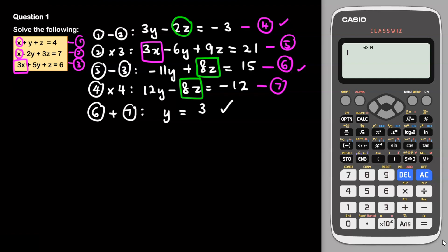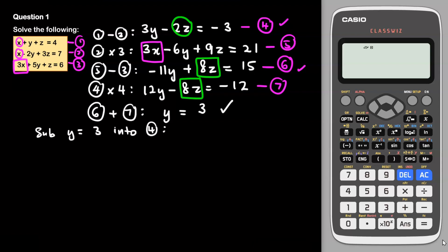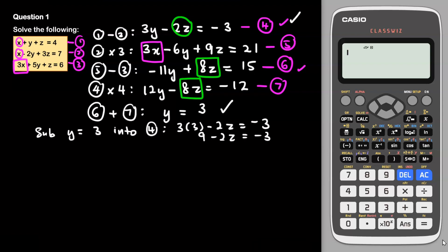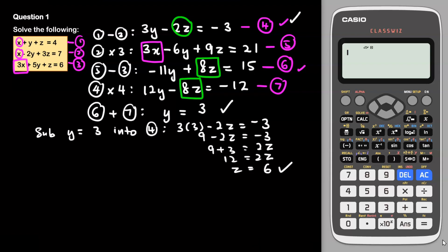Now I substitute y = 3 into equation 4, which is 3y − 2z = −3. So 3(3) − 2z = −3, giving 9 − 2z = −3. Rearranging: 9 + 3 = 2z, so 12 = 2z, therefore z = 12 ÷ 2 = 6. We now have z = 6.